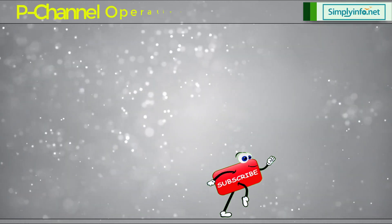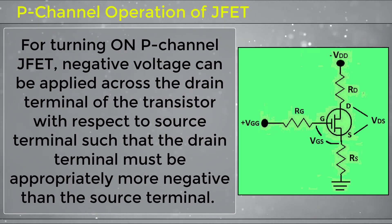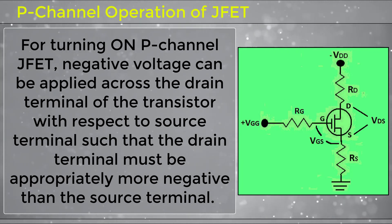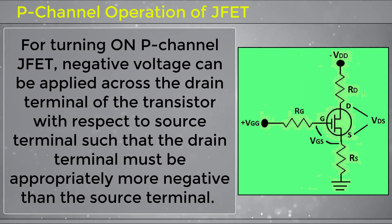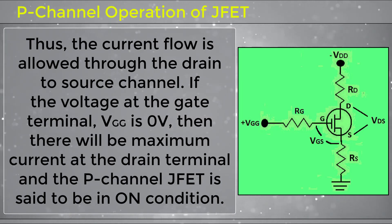Now let's look into P-channel operation of JFET. For turning on a P-channel JFET, a negative voltage is applied across the drain terminal with respect to the source terminal, such that the drain terminal is appropriately more negative than the source terminal. This allows current flow through the drain-to-source channel.